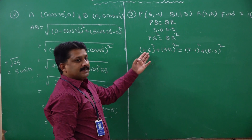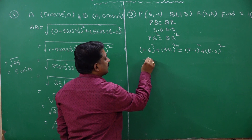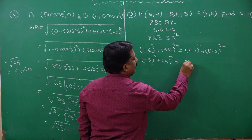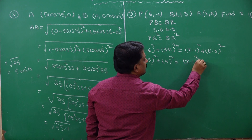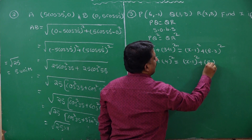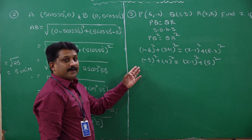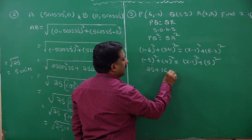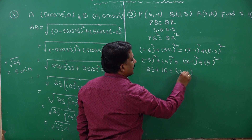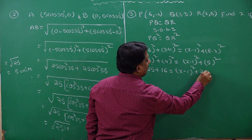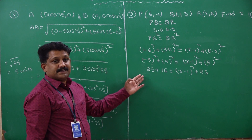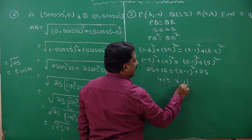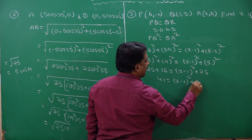Now: 1 minus 6 is minus 5, so (minus 5) all square plus (4) all square is equal to (x minus 1) all square plus 5 squared. That gives 25 plus 16 equals (x minus 1) all square plus 25. So 41 equals (x minus 1) all square plus 25.